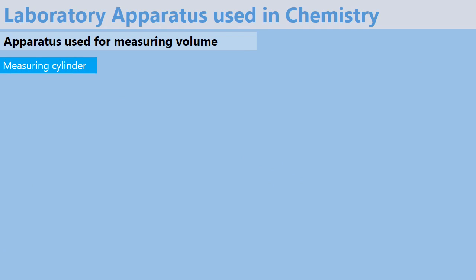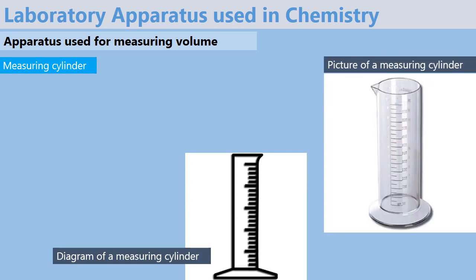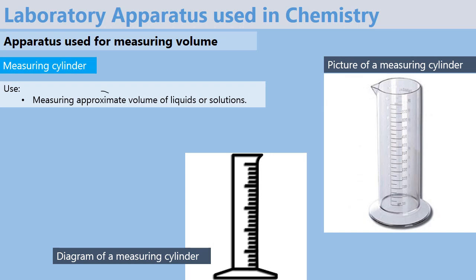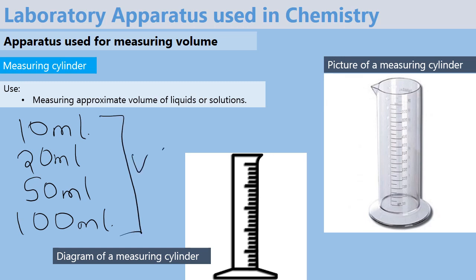The next apparatus is known as a measuring cylinder. Here we have a nice diagram and a picture. A measuring cylinder is used to measure approximate volume of liquid or solutions. We have different sizes of a measuring cylinder — for instance, the 10 milliliter, 20 milliliter, 50 milliliter, 100 milliliter, and so on. It all depends on the amount of volume you need to measure.